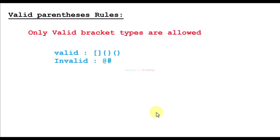The question is: how do we identify whether a string is valid or not? For that we must learn the valid parenthesis rules. The first rule is that only valid bracket types are allowed in your string — we can use three types of brackets: round, square, and curly, open and closing. Any other character makes the string invalid.